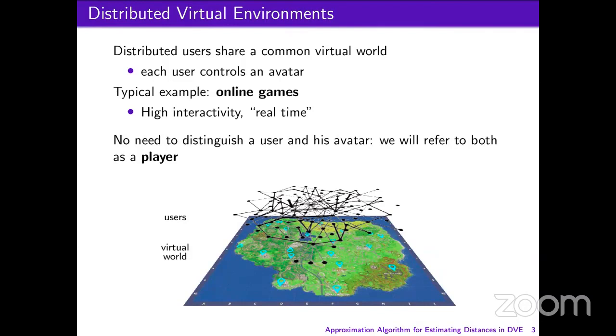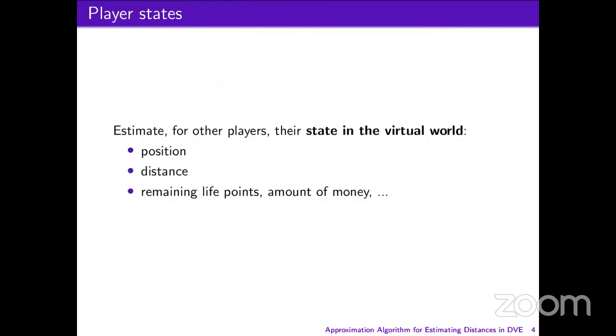We will not need to distinguish a user and his avatar, because the difference is implicit. When we say that a player sends a message, it means the user sends the message. And if we speak about the position of a player, it means the position of the avatar in the virtual world. In this virtual world, each player has a state, and each player wants to estimate the state of the other players — they need the position, the distance separating them from other players, and maybe other information like remaining life points or the amount of carried money.